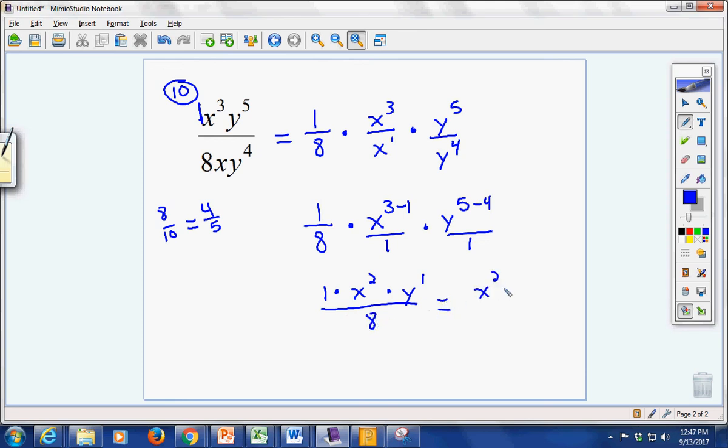So the best way to write this, but even if you got this far, I'd be good. Is x to the second, actually, just y. If you had a 1 there, it'd be okay. Over 8. That's our simplified version.